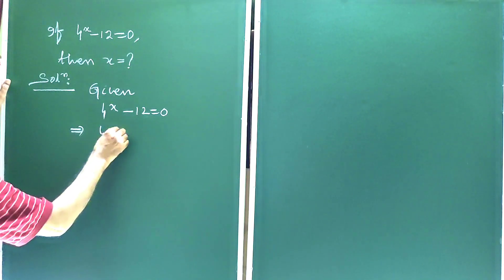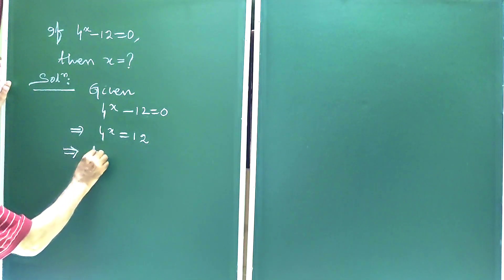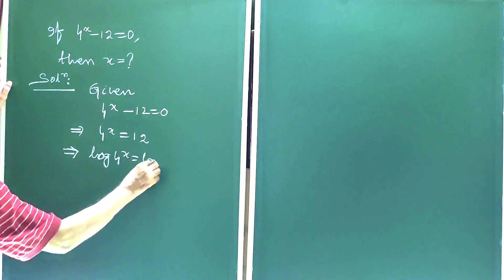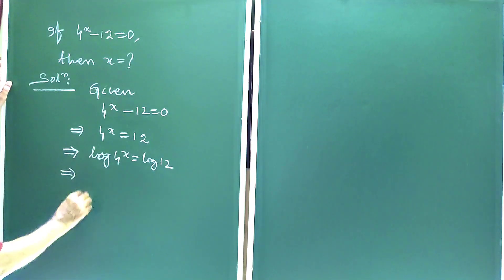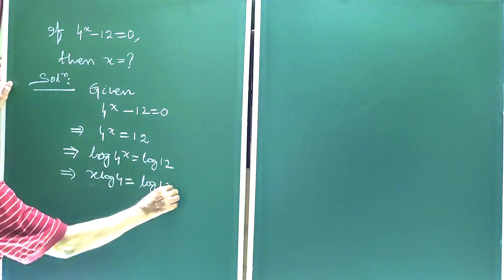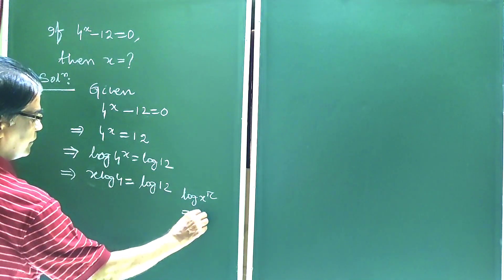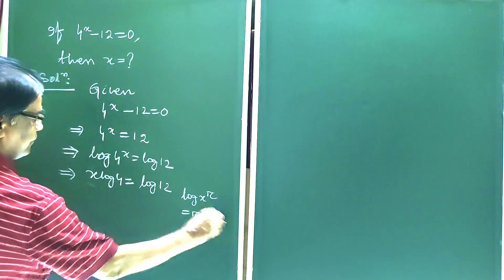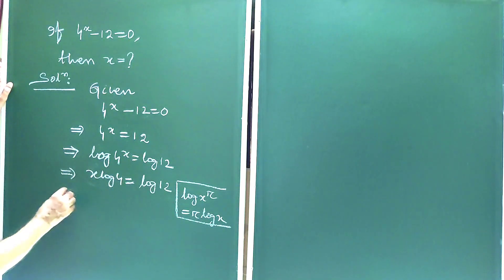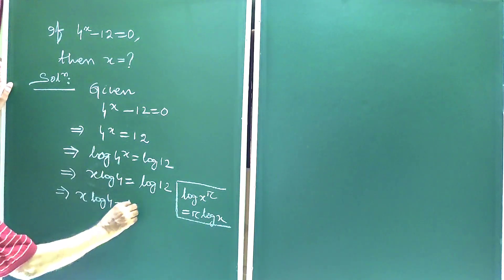This implies 4 to the power x is equal to 12. This implies log of 4 to the power x is equal to log 12. This implies x log 4 is equal to log 12. Because log x to the power r is equal to r log x, so log 4 to the power x is equal to x log 4.